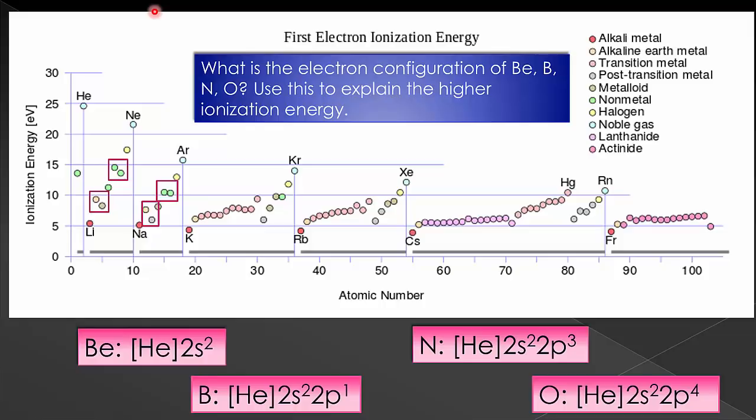The same, of course, is going to be true of the next row down in the periodic table for both. So in that case, you have magnesium and aluminum for your S, and then phosphorus and sulfur for your P, where you get that reversal.